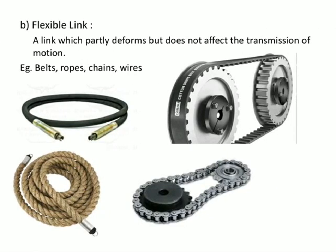A flexible link is one which partly deforms but does not affect the transmission of motion. Examples include belt, rope, chain, and wires. Whenever you have a belt, chain, or rope transmitting motion between two gears or pulleys, these are flexible links.